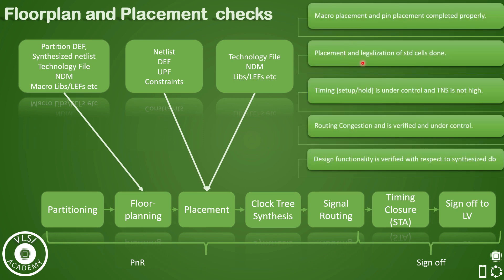Similarly, these are the checks that we do in the pre-CTS stage before we proceed for CTS. If you pay attention, the first check relates to floor planning. Once your macro placement and pin placement is correct, we must ensure that there are no cell overlaps. There should not be any cell overlaps and all cells are legal and standard cell placement is done correctly.